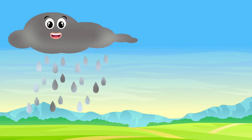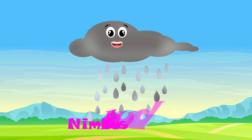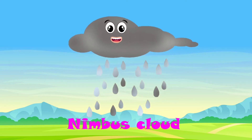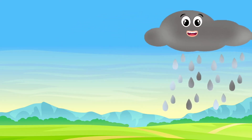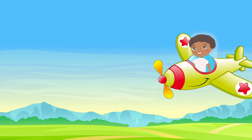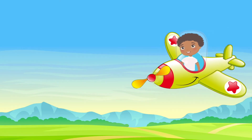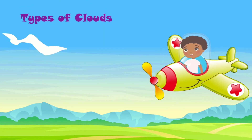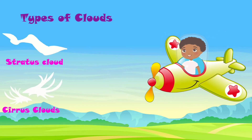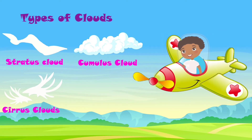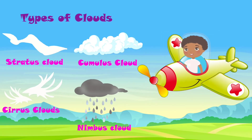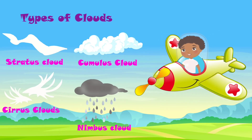I see dark rain clouds — nimbus clouds. Nimbus, nimbus, nimbus clouds — thunder and lightning clouds. What type of clouds do you see? I just saw all the clouds. Here I come! Clouds, can you follow me? What clouds are coming? I see stratus clouds, I see cirrus clouds, I see cumulus clouds. Here go the nimbus clouds. All the clouds are following me. What type of clouds do you see?